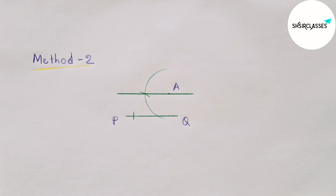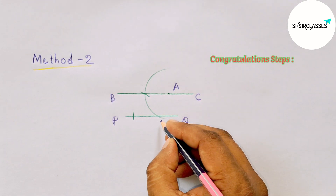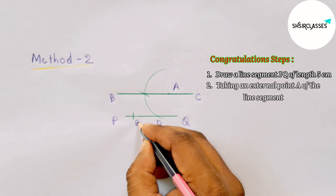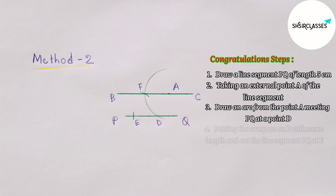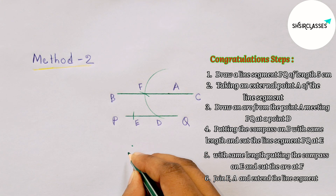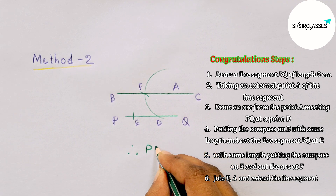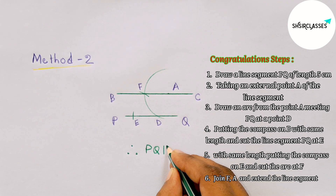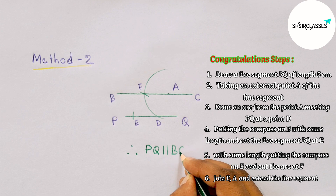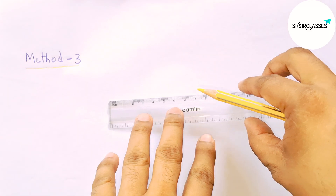Labeling points B, C, D, E, and F. Here you will get all the construction steps. Therefore PQ is parallel with BC — PQ ∥ BC. By this way you can draw a parallel line.